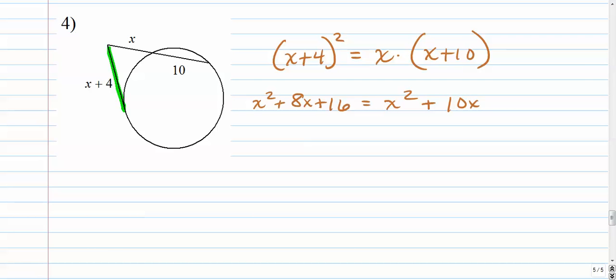The x squareds are on both sides. That's a really good thing. We can cancel those right out. Leaving us with 8x plus 16 equals 10x. 16 is equal to 2x. I subtracted 8x from both sides. So x is 8.